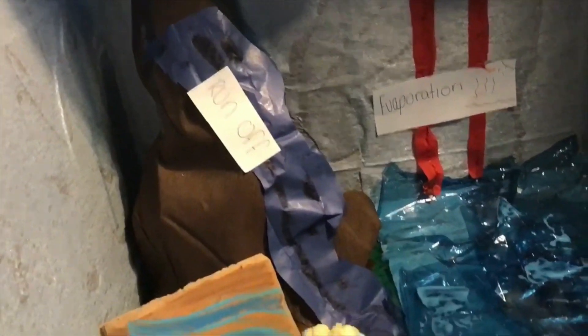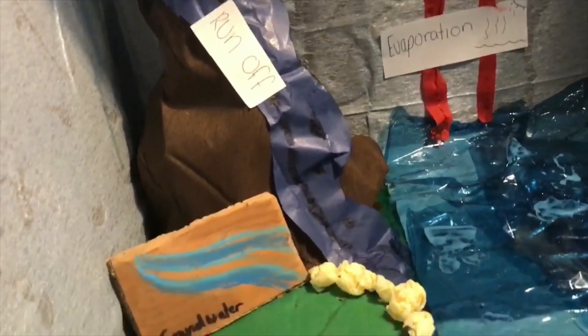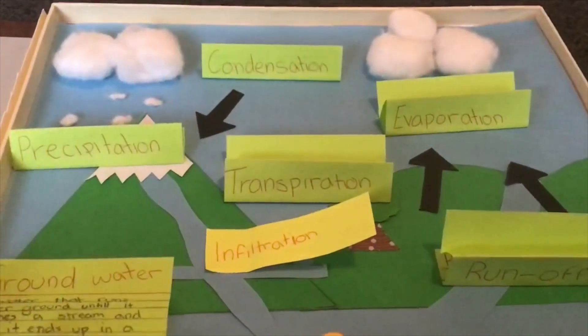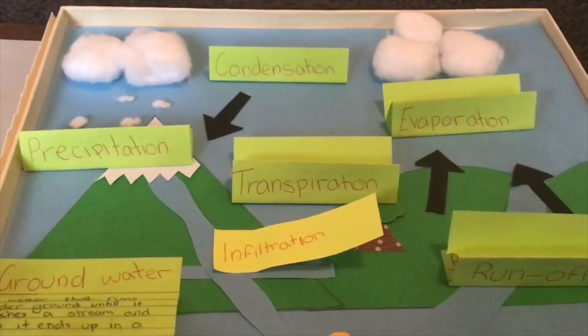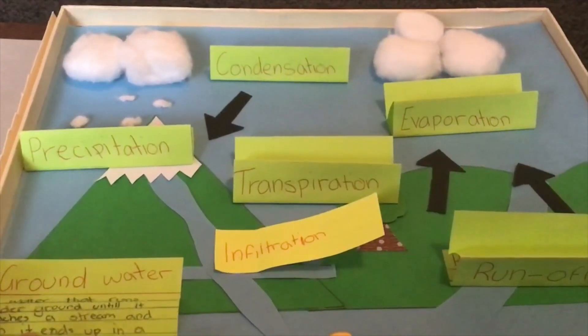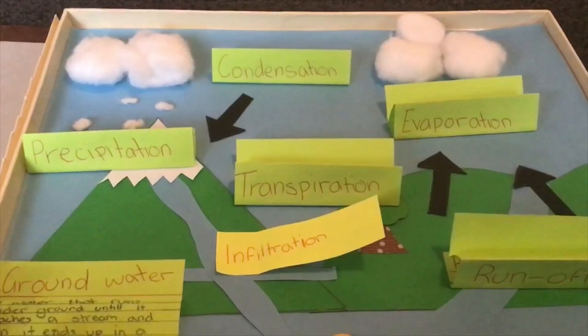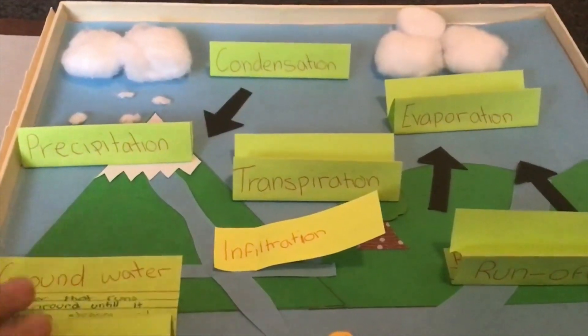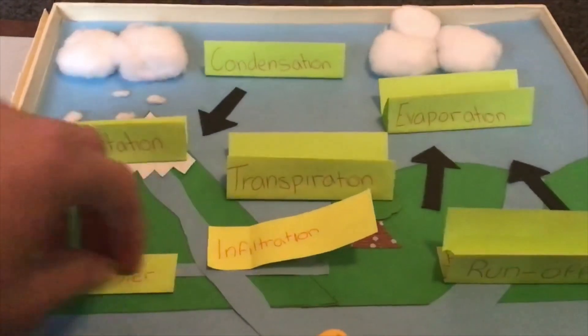Runoff — when the rain runs down the mountain. Groundwater is water that runs underground until it reaches a stream and then it ends up in a lake.